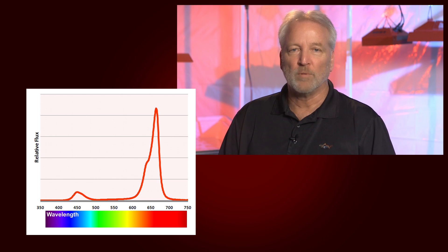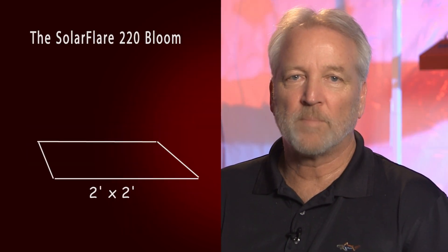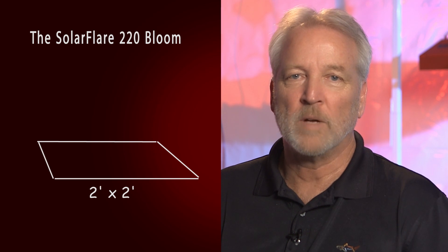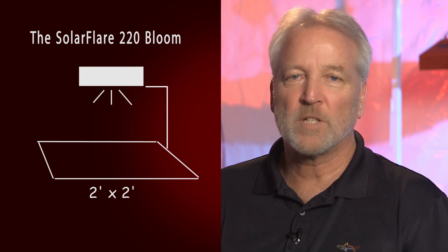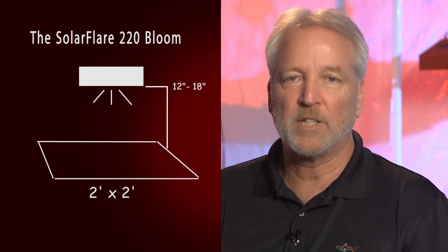The Solar Flare 220 is designed to cover up to a 2x2 area for bloom. To get a good spread, you want to position the light approximately 12 to 18 inches above your canopy.